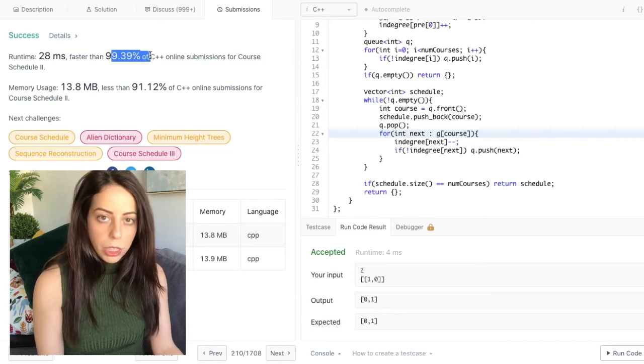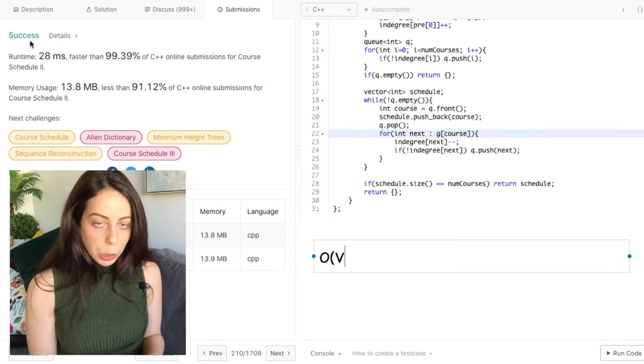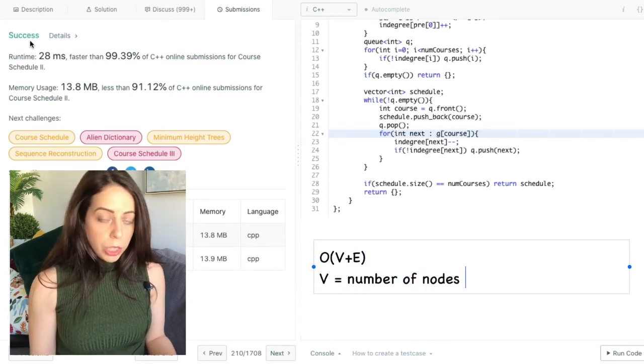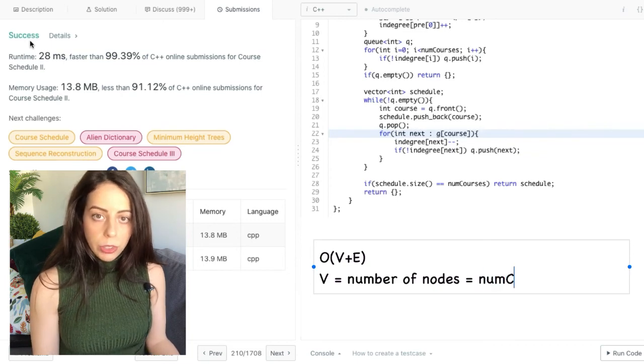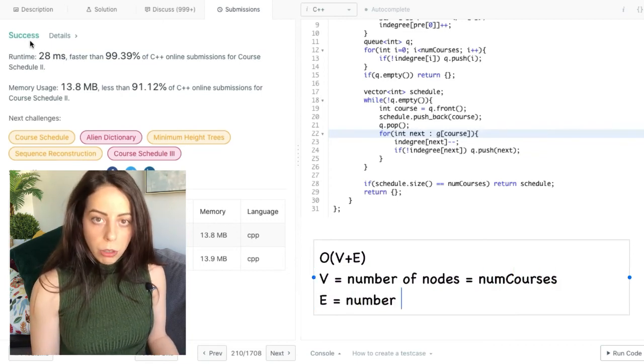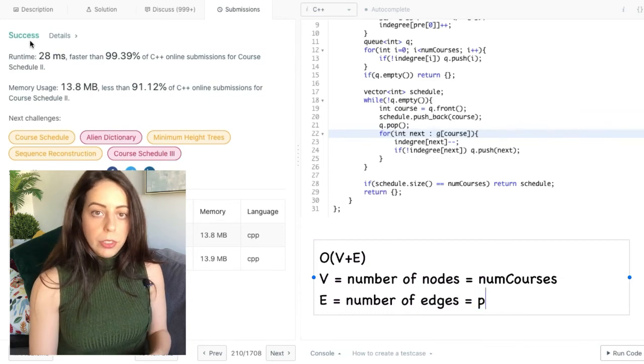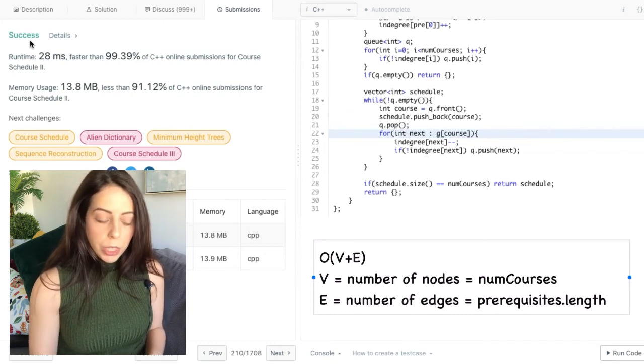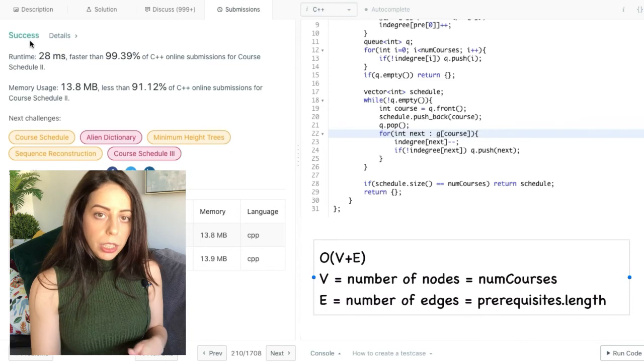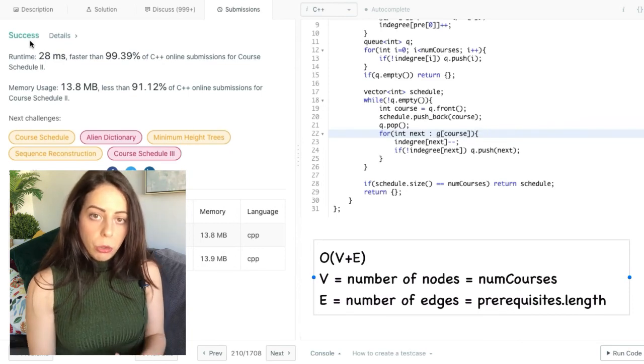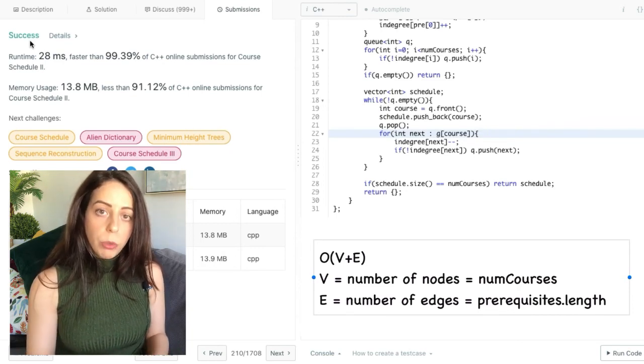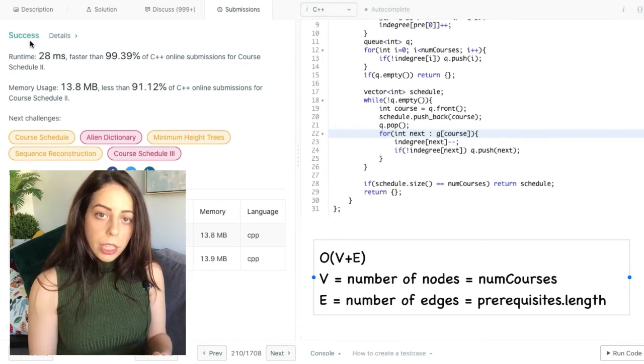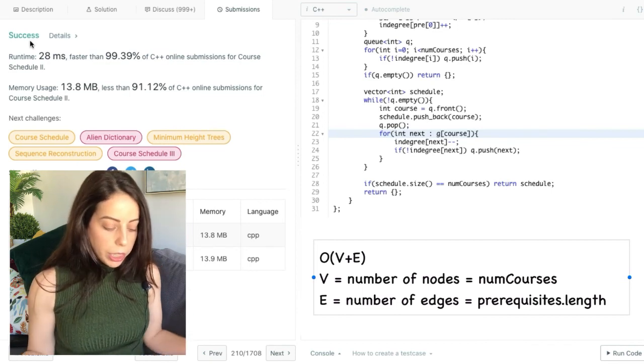Now, a few words about the complexity of this algorithm. The time complexity is going to be O of V plus E. Where V is the number of nodes in the graph. In our case, the number of nodes in the graph is numcourses. And E is the number of edges in the graph. Which in our case is the length of the prerequisites array. Because each pair in the array represents an edge in the graph. Now, the way we get to this complexity is because in the worst case, each node is pushed to the queue exactly one time. That's where we get the V from. And then for each node, we iterate over all of its neighbors. And that's where we get the E from. Okay, so that's how we get to V plus E.